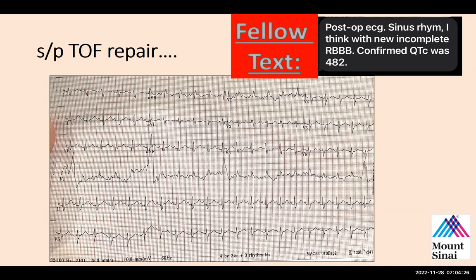So the fact that the QT is 480 — although that would normally be very worrisome in somebody who has a structurally normal heart — in somebody who has a bundle branch block, I don't actually think it matters very much. The fellow was 100% accurate that the QT is somewhat prolonged, but it doesn't really matter because the QRS duration is prolonged. That's why sometimes people will measure a so-called JT interval — from the end of the QRS to the end of the T wave — as a surrogate of QT interval, in which case it would probably come out in the normal range.